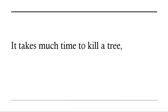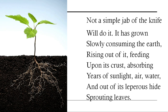The opening line — 'It takes much time to kill a tree' — is separated because there is a clear break in the poem itself. This is the statement of the poem: a tree cannot be killed just like that. Not a simple jab of knife will do it. Like you can kill a human being with a simple jab, that cannot happen with a tree. What grows slowly also withers away slowly.